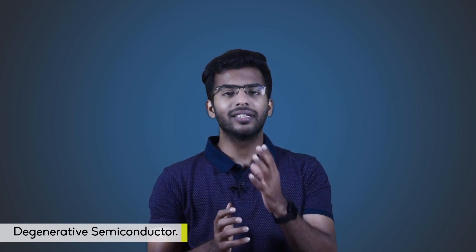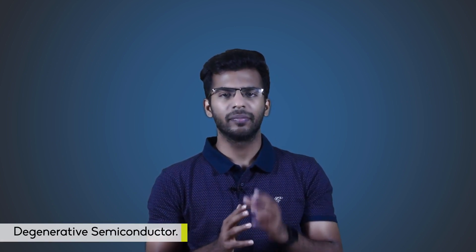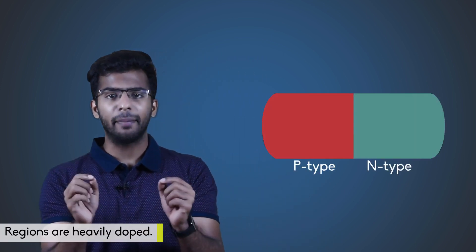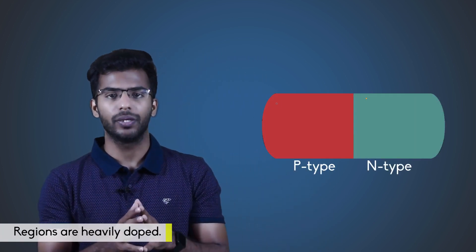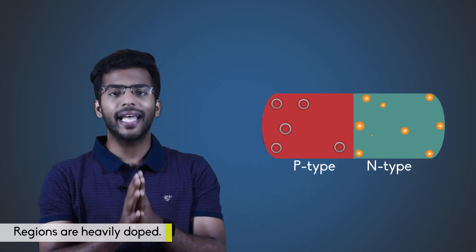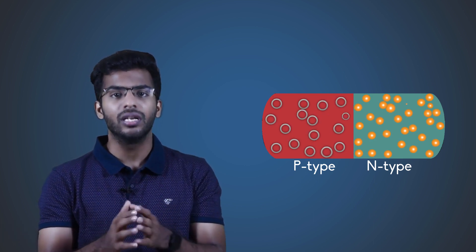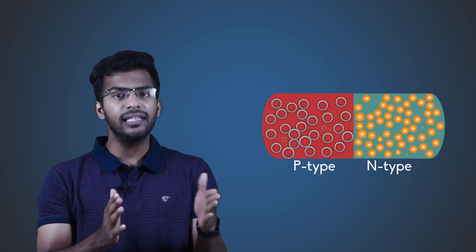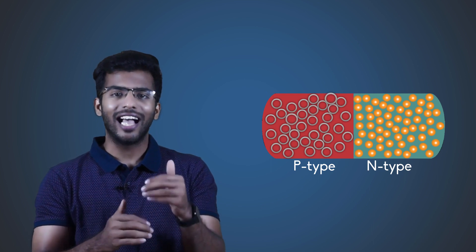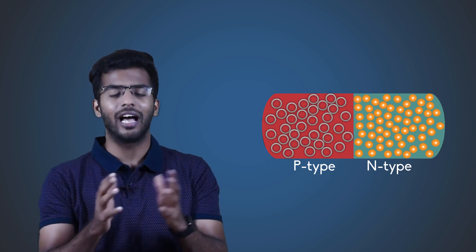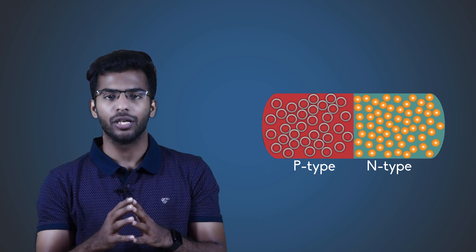The second criteria is that it should be a degenerative semiconductor. This means that the N-type and P-type regions are heavily doped. This heavily doped semiconductor will be beneficial in achieving the lasing action, as more number of electrons and holes are available for recombination.